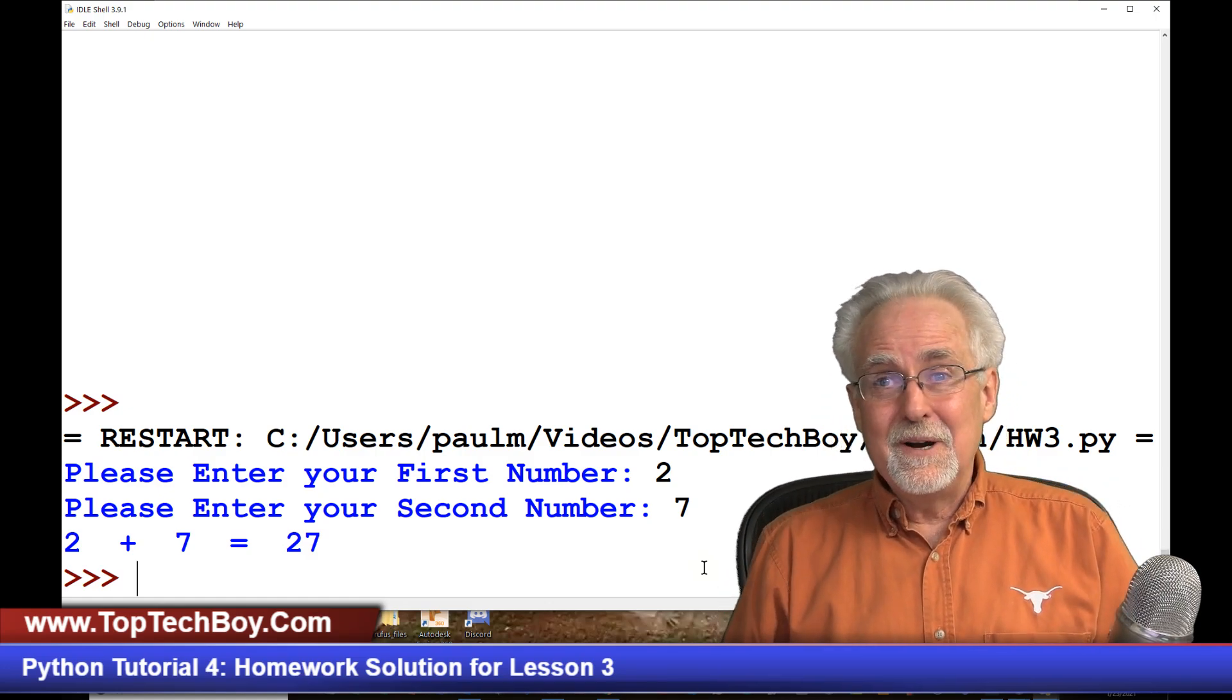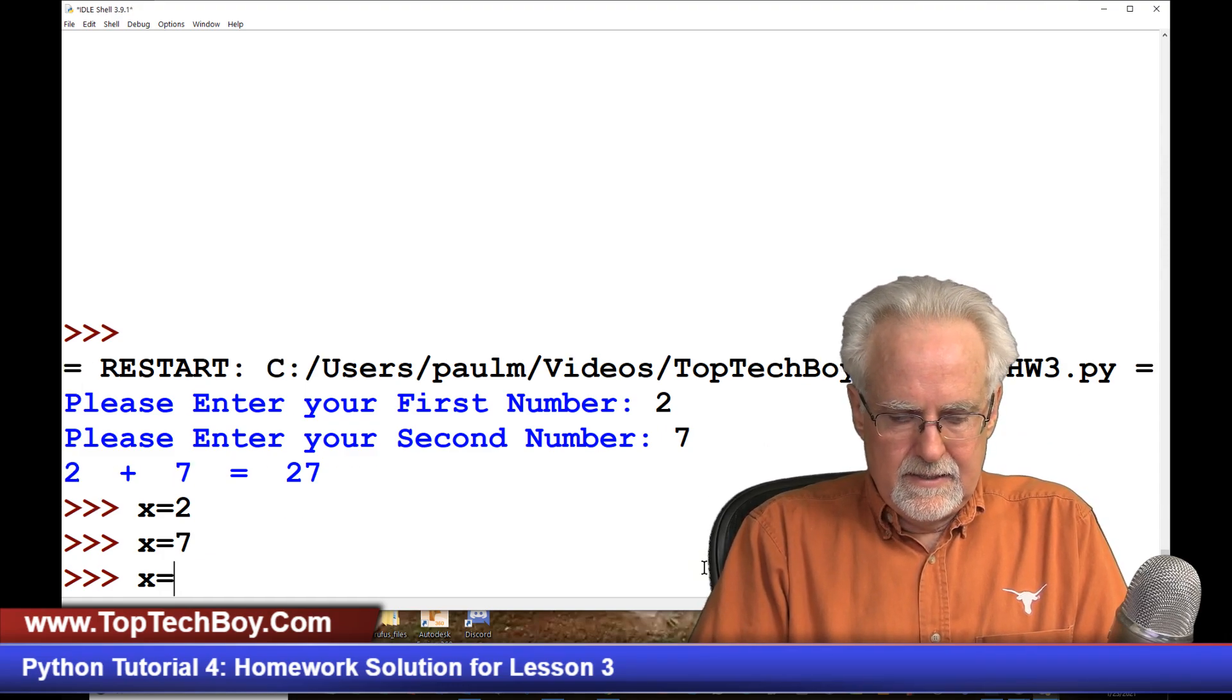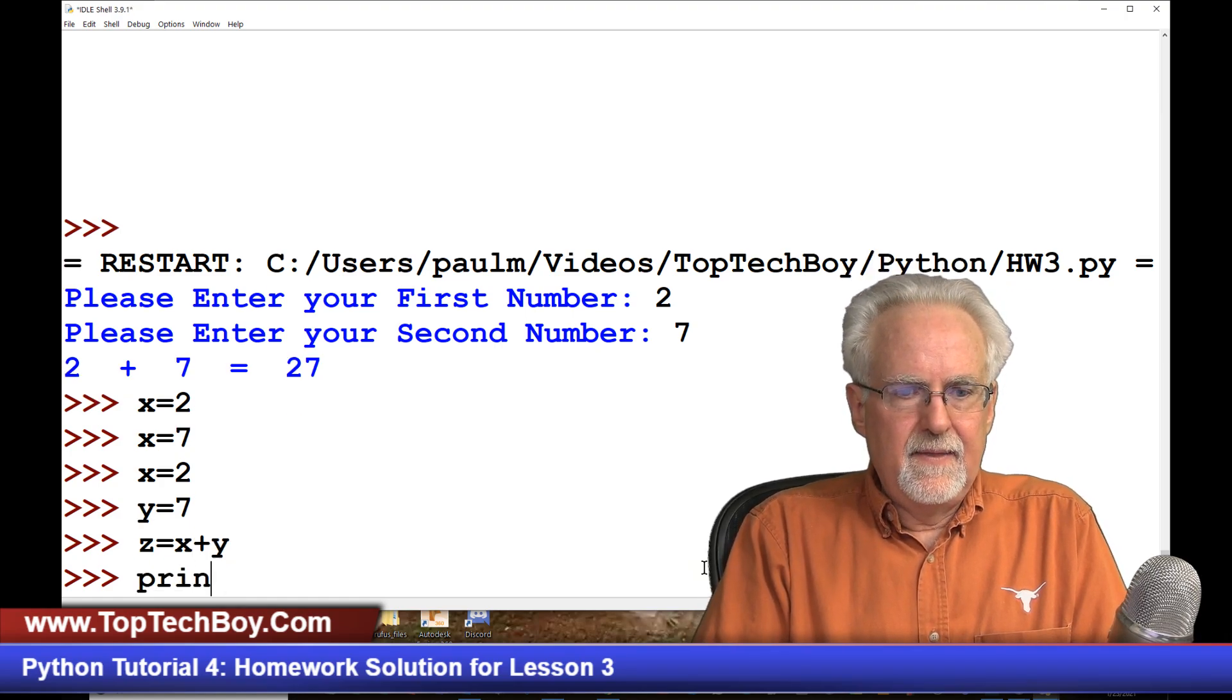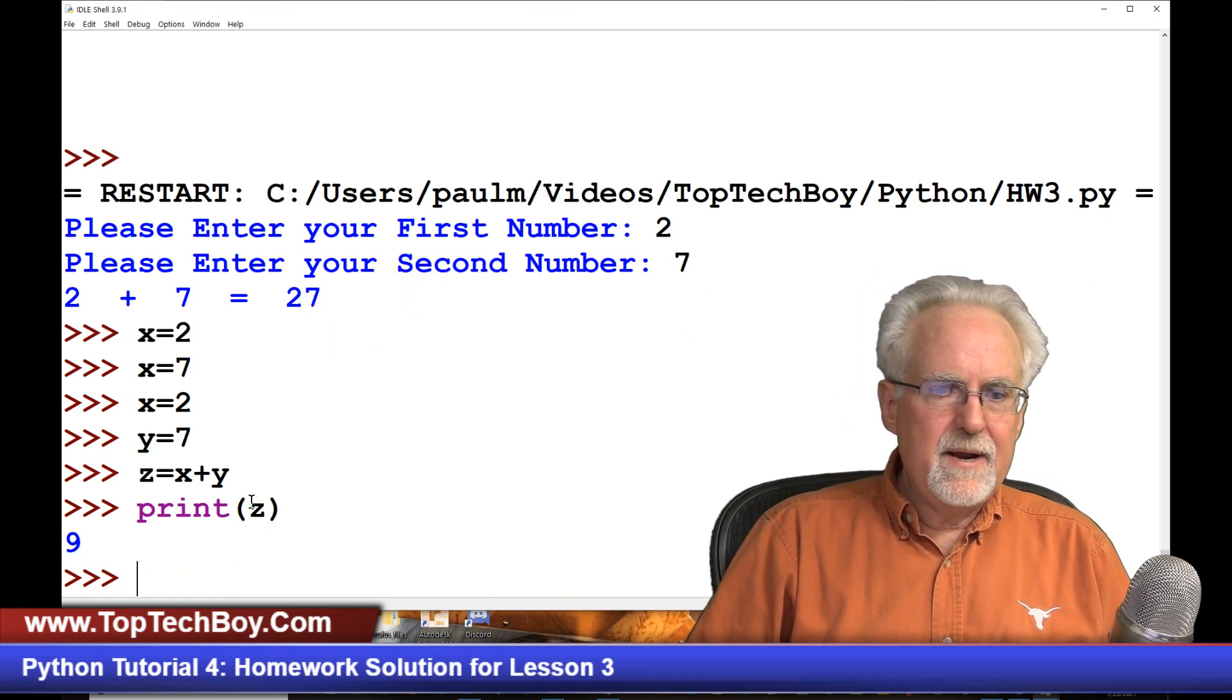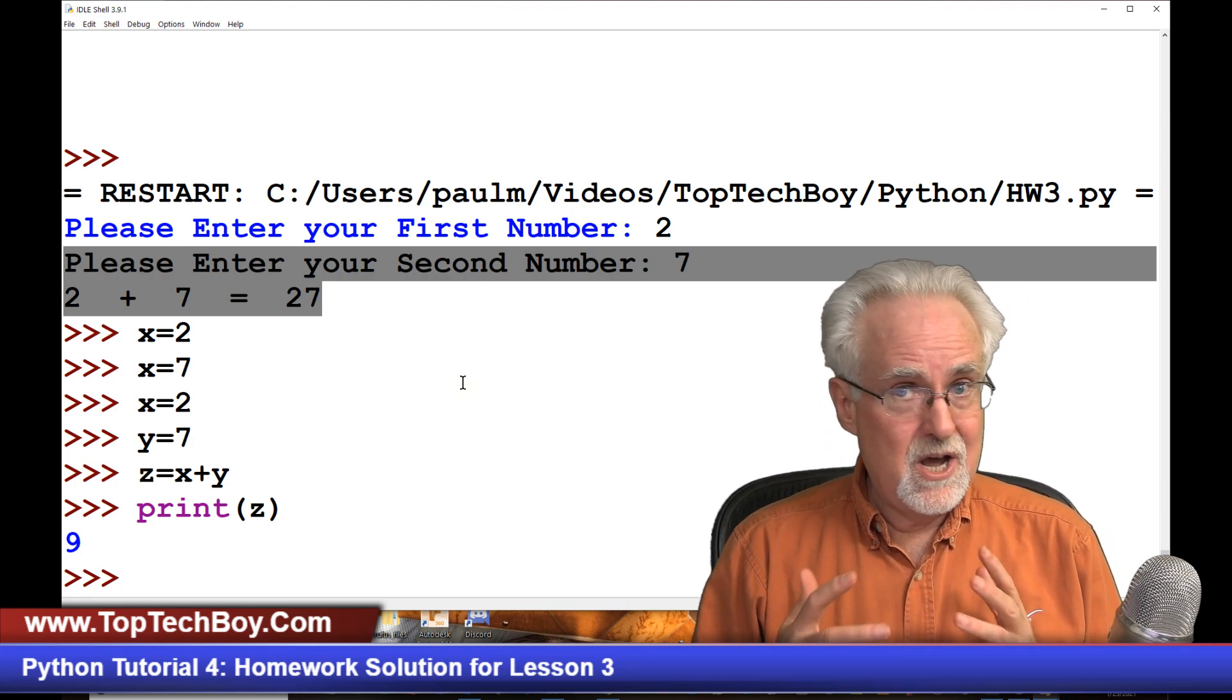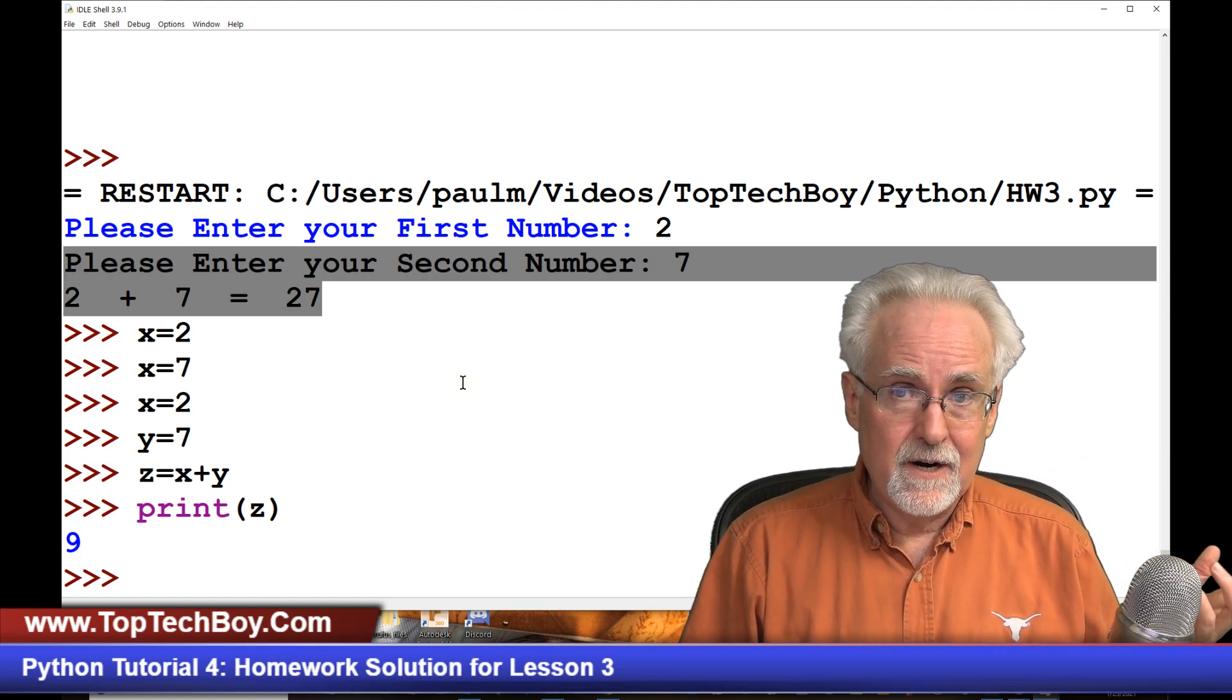Did you get this error? What's going on? Because I can say X equal two, and I can say Y equals seven. I mean, I can say X equal two, I can say Y equals seven, and I can say Z is equal to X plus Y. And then I can say print Z. And it works. So why does this work and why does this not work?